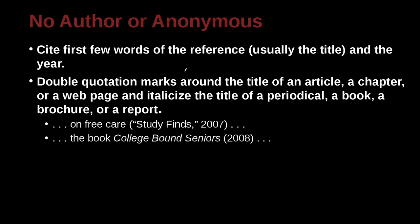In this next example, we can see the book 'College Bound Seniors, 2008.' We should use the author of the book, but we don't have the author because it's anonymous — no author. So we go ahead and use the first few words in the reference, which would be the name of the book. And since it is a book, we italicize it — write it at an angle — which is the same as underlining it. That means it's a whole book, not a piece of something else.